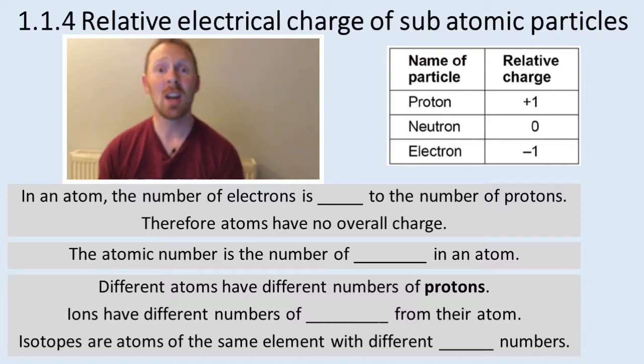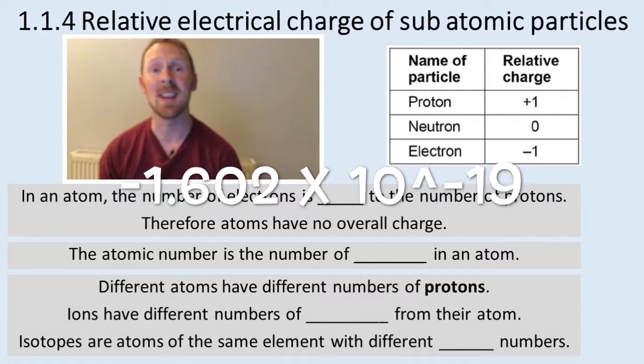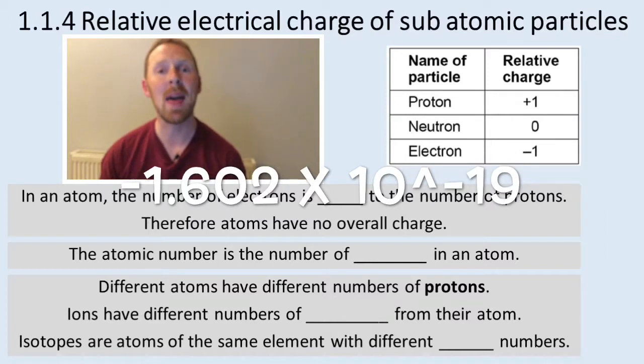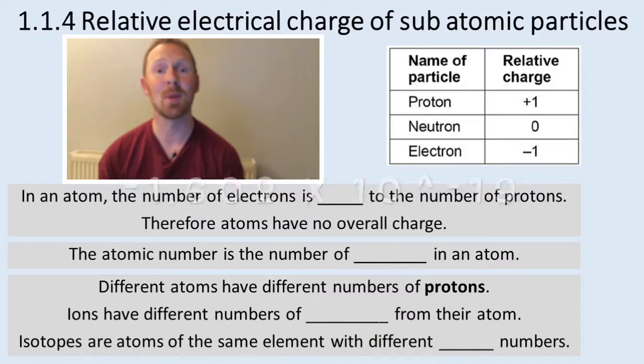It's not their actual charge. Their actual charge is a really small number, like 10 to the minus 19. But for us, we're going to compare them. So a proton and an electron have a relative charge of plus one and minus one compared to each other, and compared to a neutron.